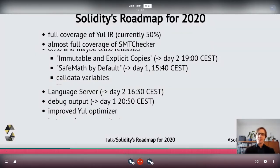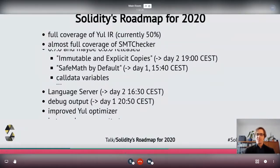One feature makes the copying semantics more explicit and also makes at least reference types immutable by default. So if you want to have a memory array where you can change values, you have to specifically mention that at the point of declaration. There will be a discussion session on that topic on day two at 7 p.m. CST.